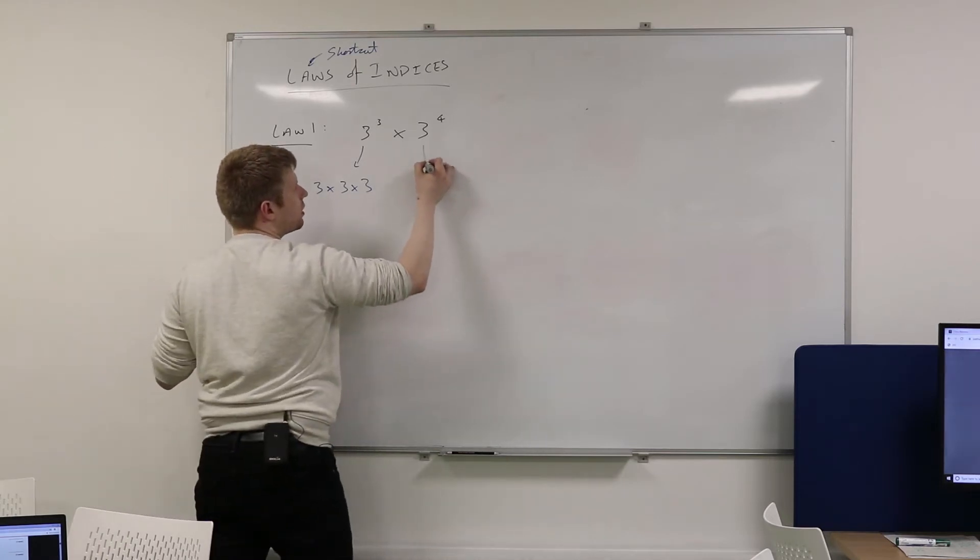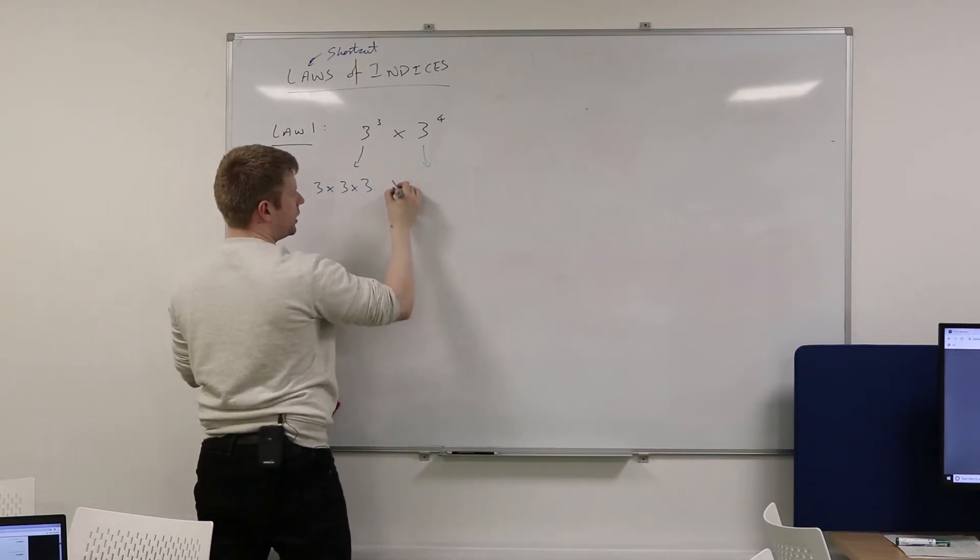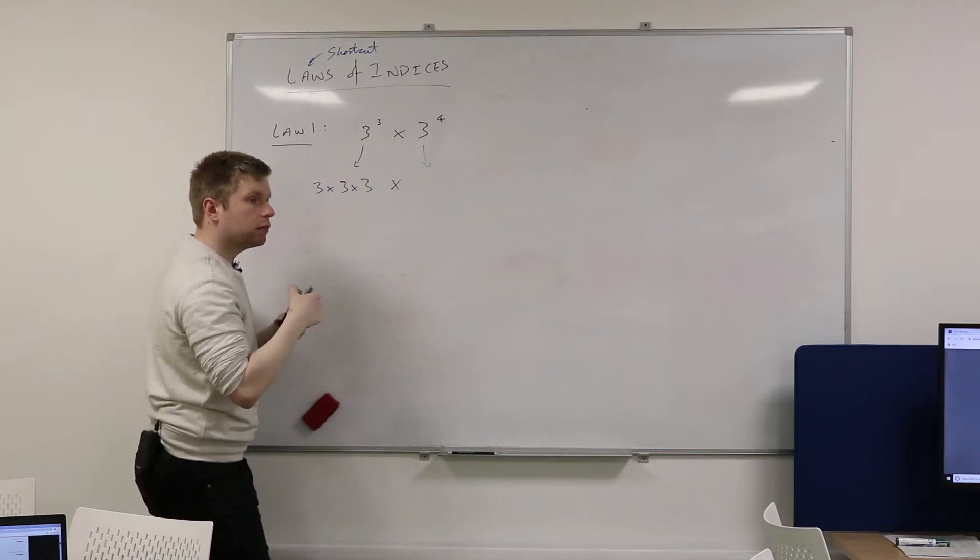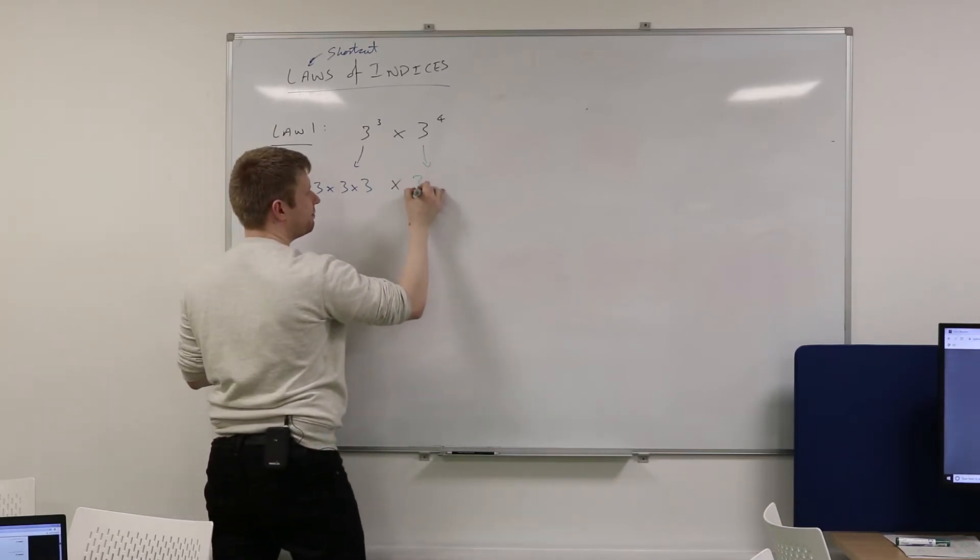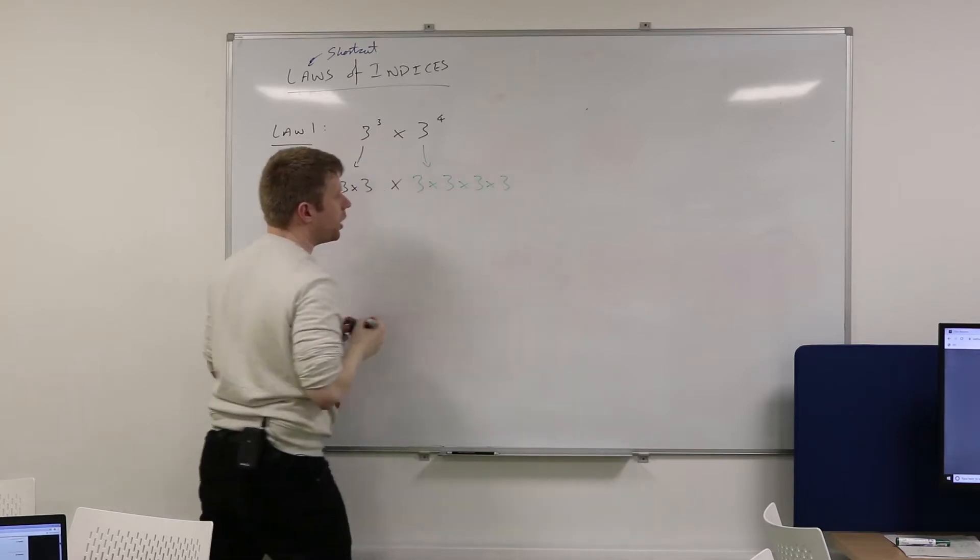What would this 3 to the power of 4 be? If I was going to write it out in longhand. 3 multiplied by itself, 4 times.